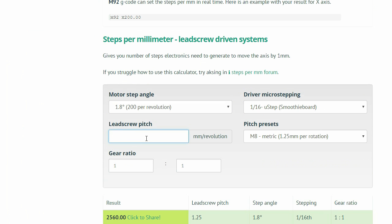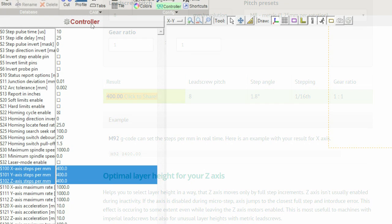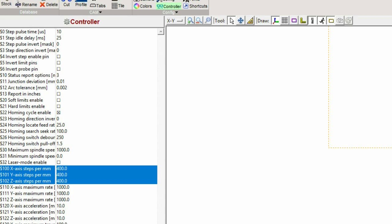I ignored the pitch preset and the gear ratio should be 1 to 1 because the lead screw is directly connected to the motors. And the magic number I wanted was 400.00. Over in BCNC using the tool tabs I selected the controller configurations and put that number in for $100 for the x axis, $101 for the y axis and $102 for the z axis.